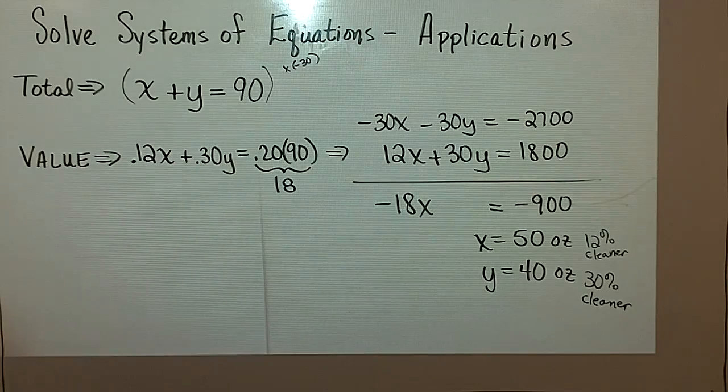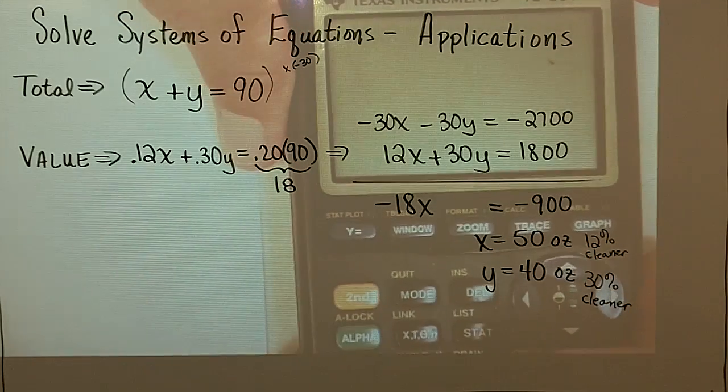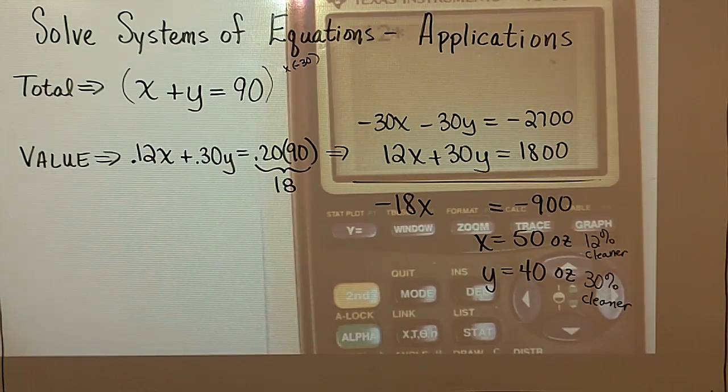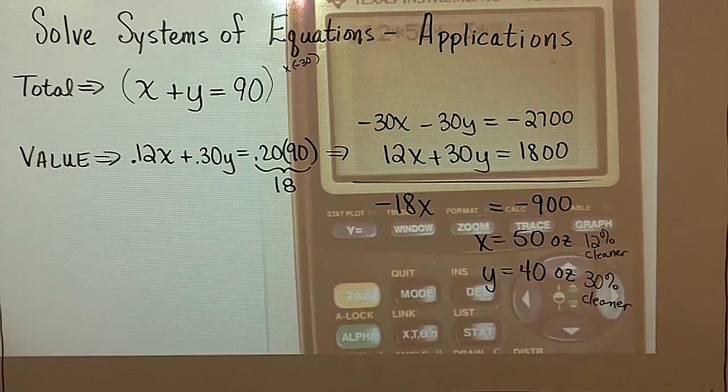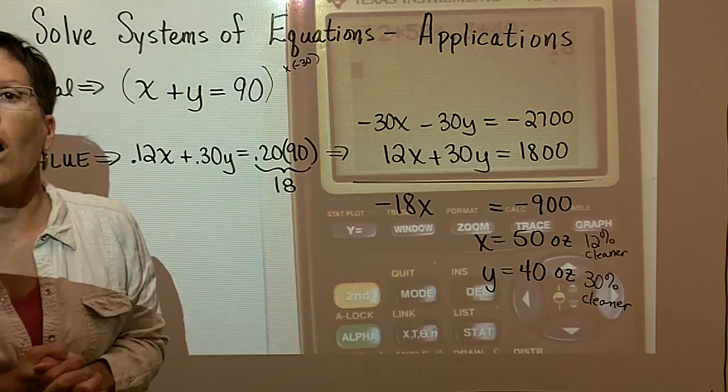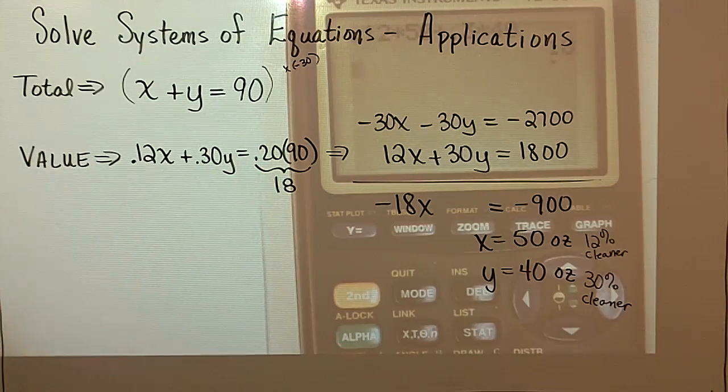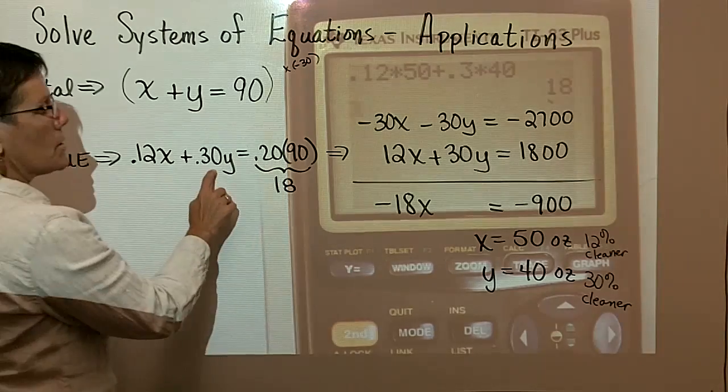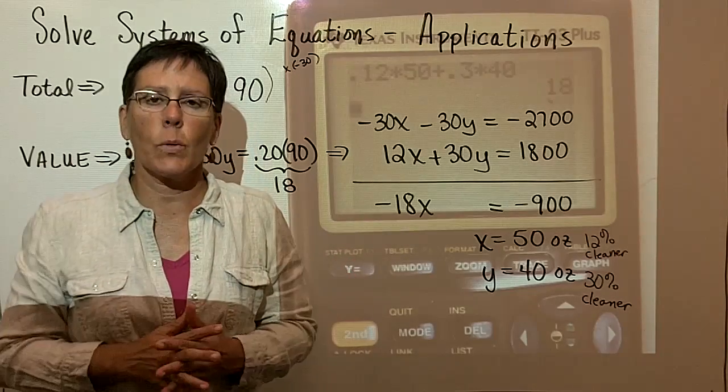I do know that the sum is equal to 90. I could take my calculator again and check that second statement. Let's see, 0.12, 12% of 50, and add to that 30% of y, which is 40. And that is the pure alcohol. I'm taking this statement, and I wanted to know if that equals the 20% times 90. And it sure does. The 12% of 50 plus this 30% of 40 does indeed equal this 18 here.